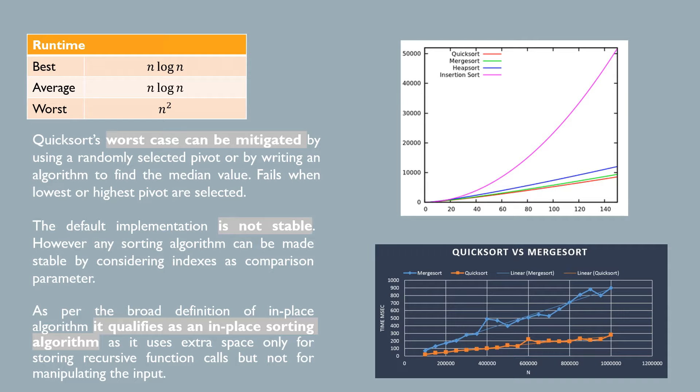Quicksort is one of the fastest commonly used sorting algorithms, being two times and even three times faster than competing sorting algorithms such as MergeSort and Heapsort.